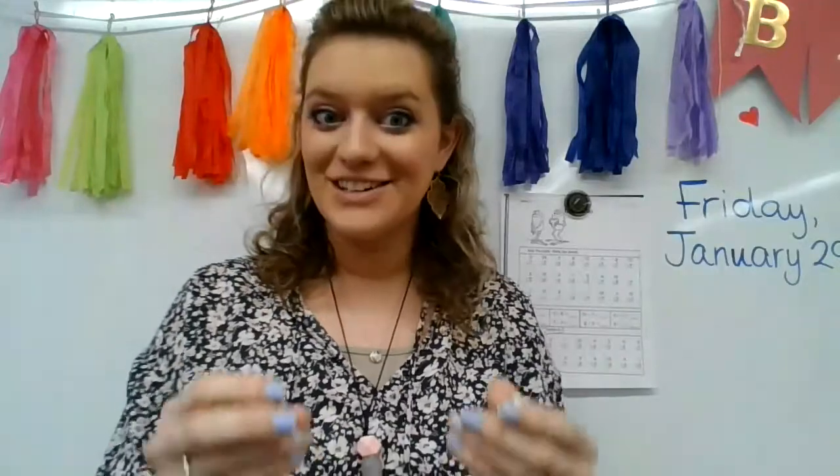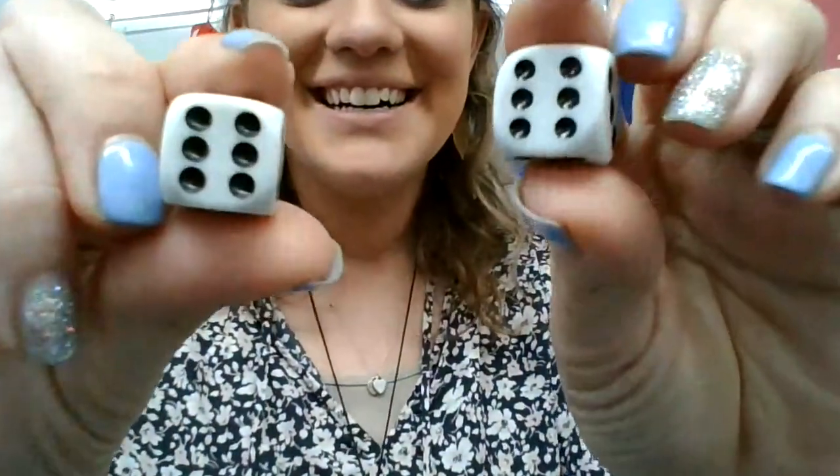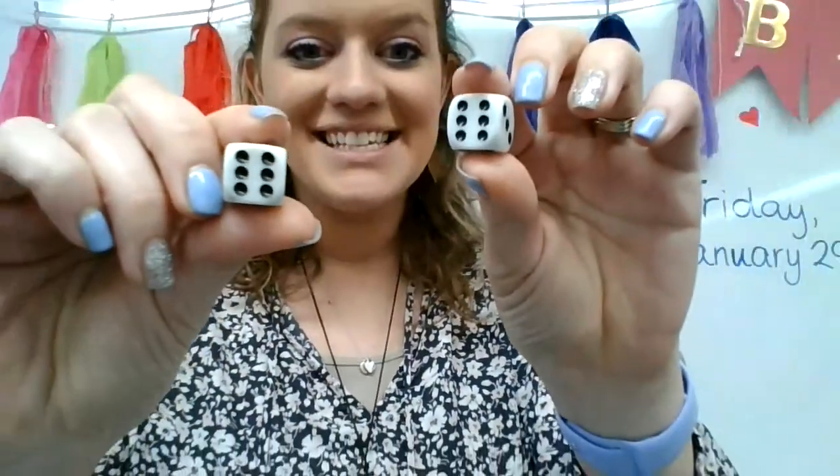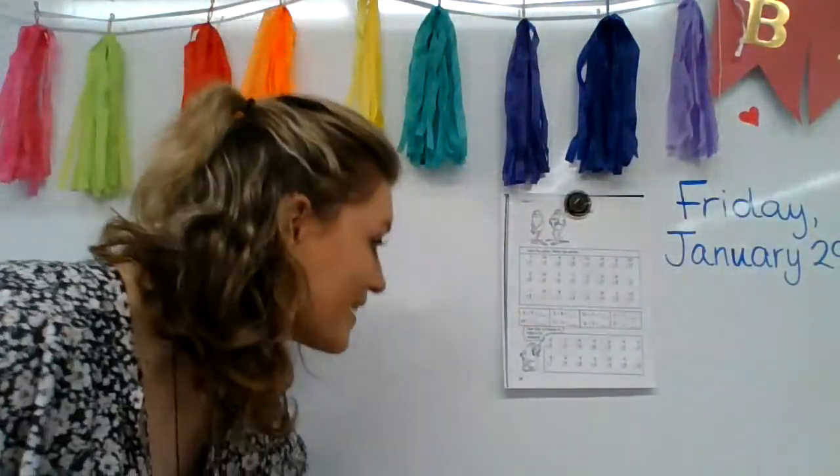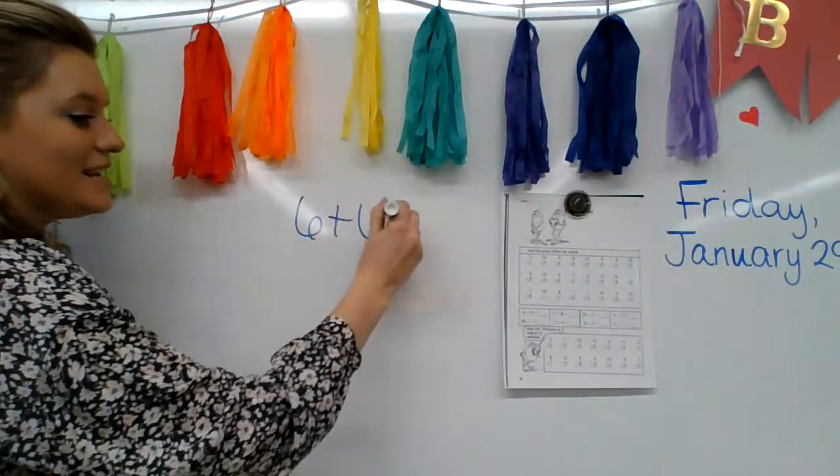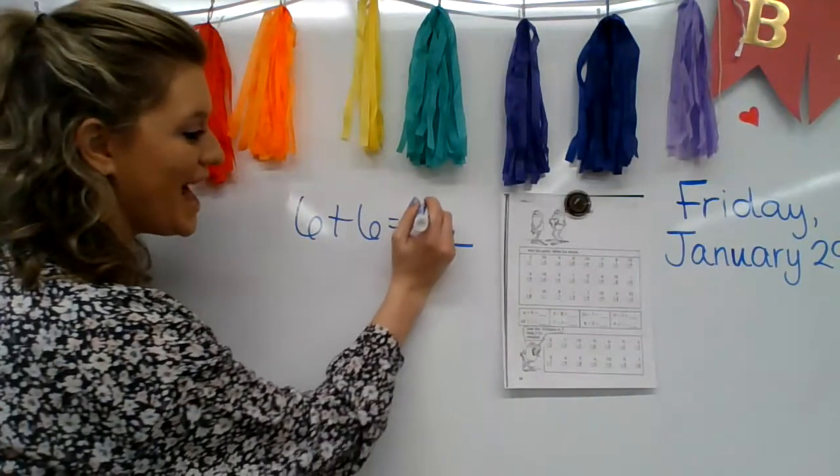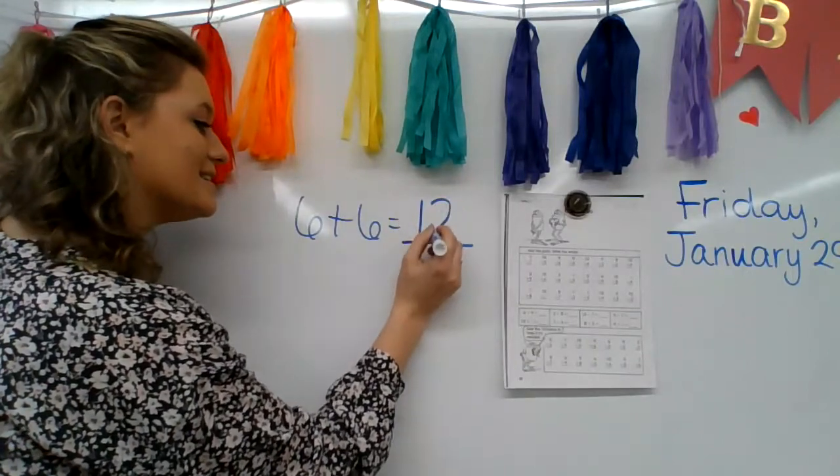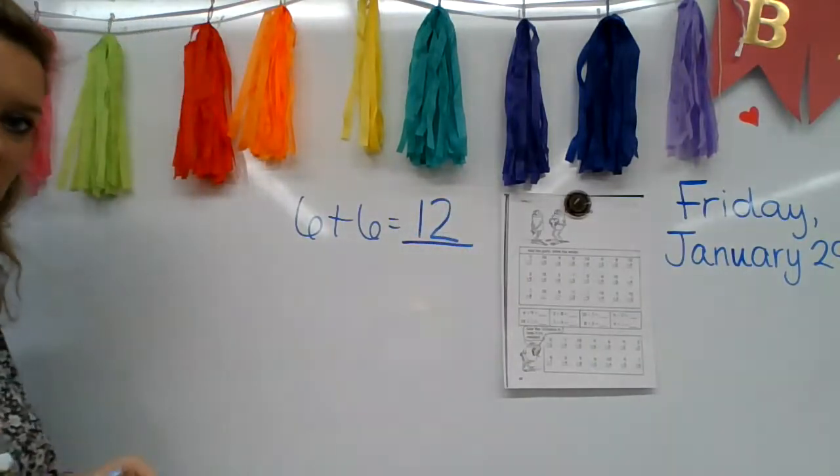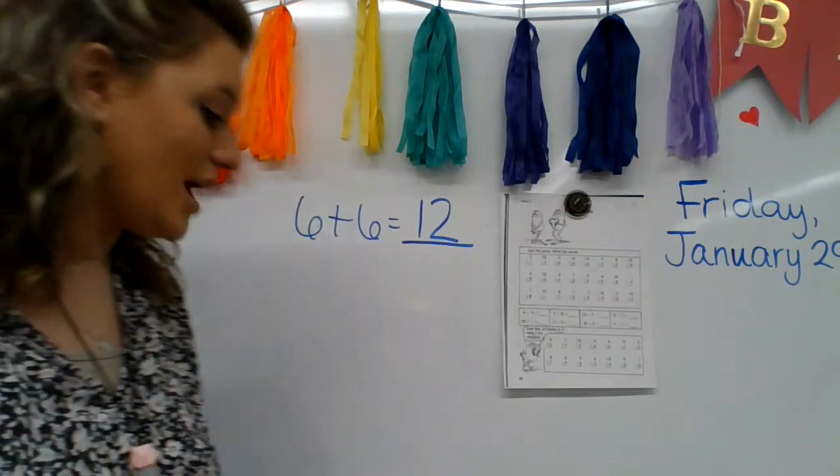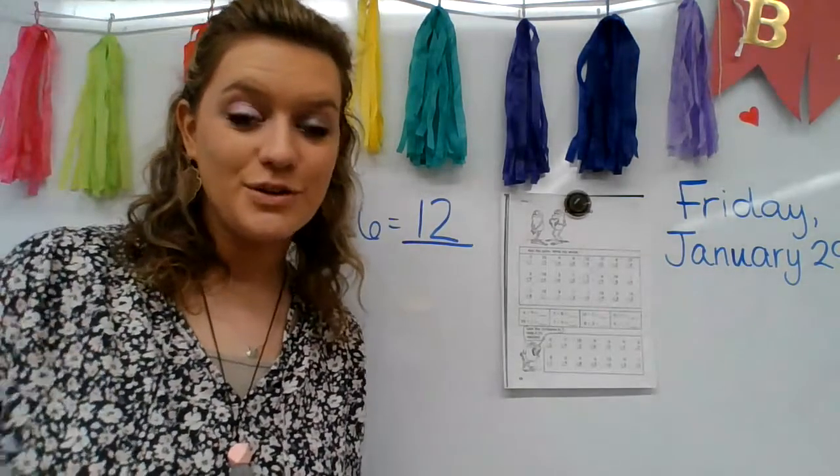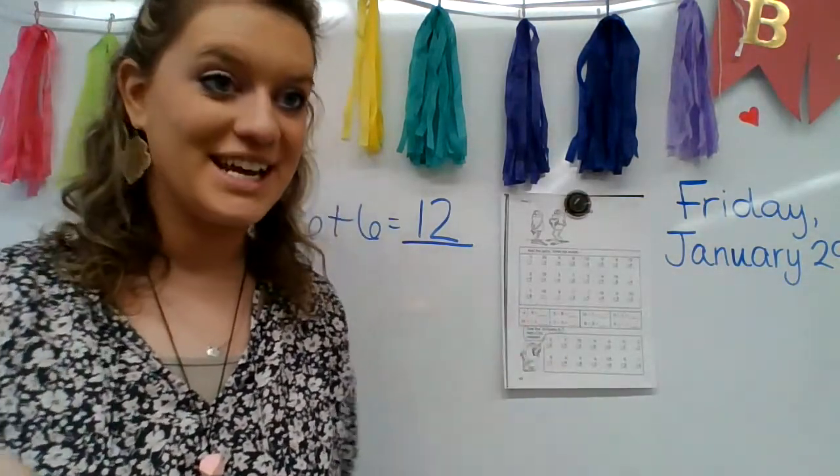I'm going to roll the dice and kind of toss them. Oh, you guys are lucky. Six and six. That's a double. We know how to do that double, don't we? Six plus six equals 12. Good job. So that means we are going to do 12 problems together.